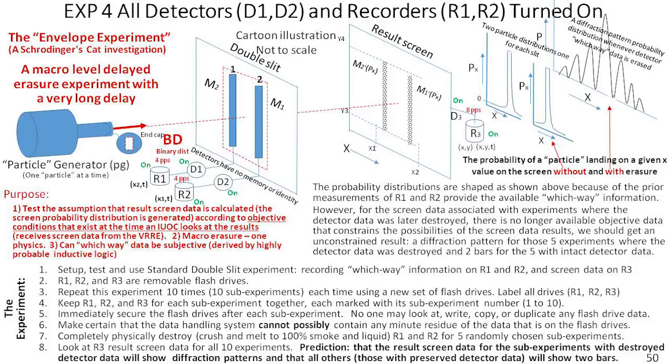For each run, I'll take the data from R1, R2, and R3 onto flash drives. We know all these flash drives will have the same data since I'm repeating the same experiment. Eventually, I'll have 20 sets of three flash drives, one set for each experiment.